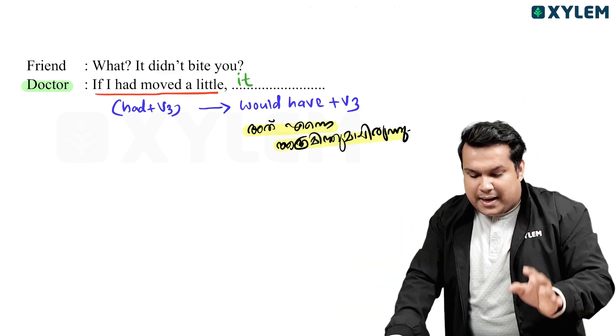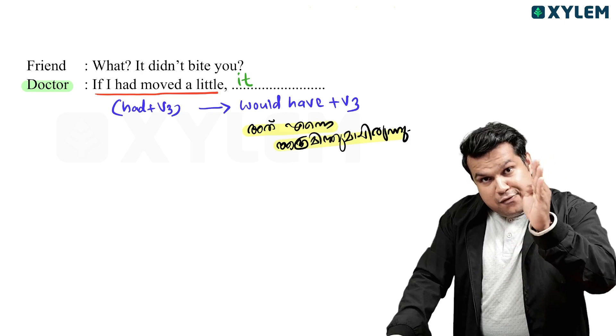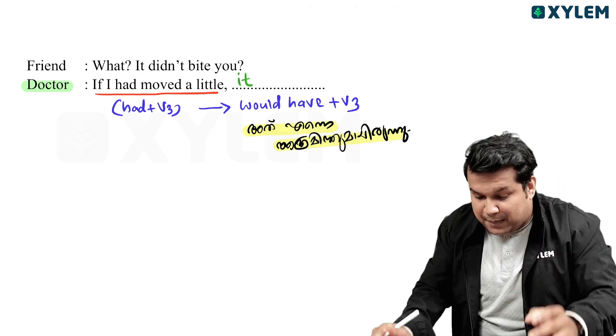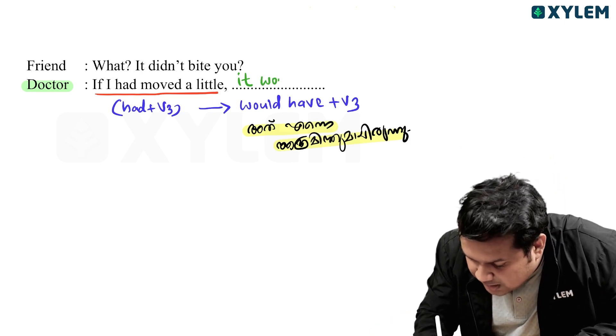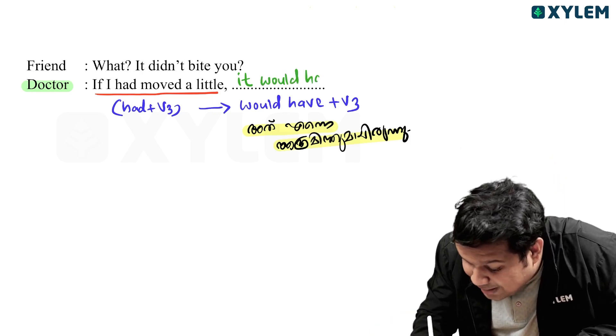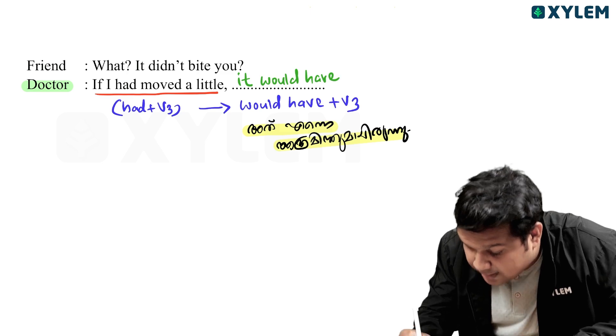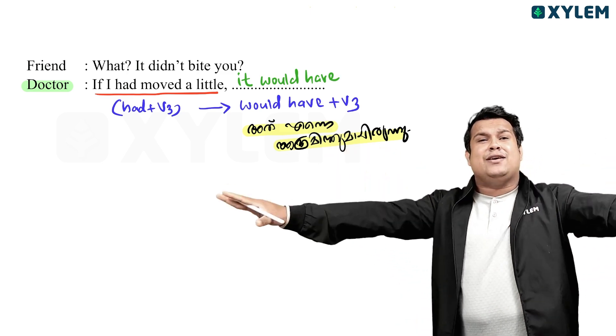So in the if-clause: had plus V3. In the main clause: would have plus V3. Would have is a constant — that's the key rule to remember. You should have a strong grasp of this.